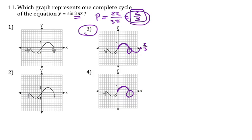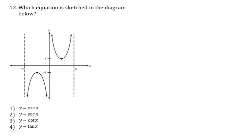Number 12: the graph looks like a secant or cosecant. To identify it, get the reciprocal — sketch the original underlying graph by flipping the current graph about 1 and -1. The vertical asymptote is at zero. The reciprocal graph looks like sine, so the reciprocal of sine is cosecant. Our answer is choice 1: cosecant of x.